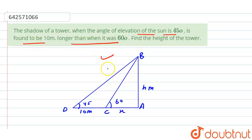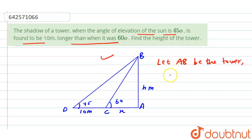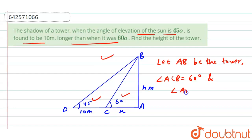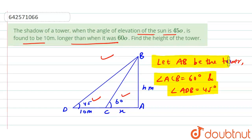Here is the figure for this problem. Let AB be the tower, which is h meters long. AC makes an angle of 60 degrees and AD makes an angle of 45 degrees with the top of the tower. So angle ACB equals 60 degrees and angle ADB equals 45 degrees.